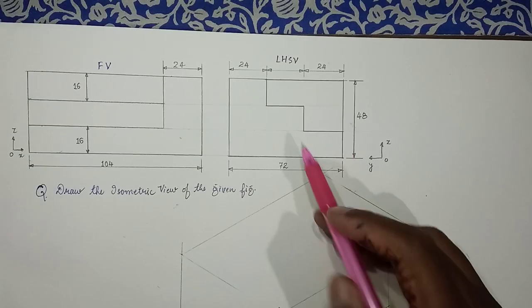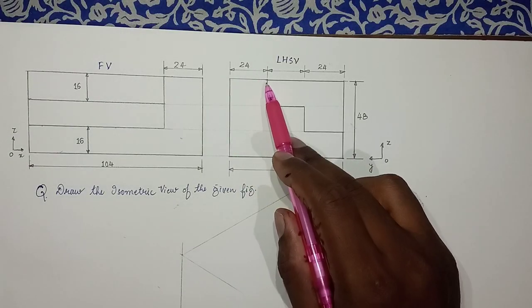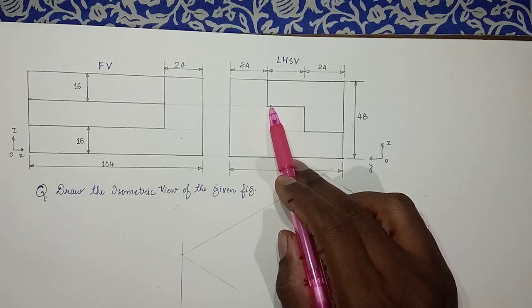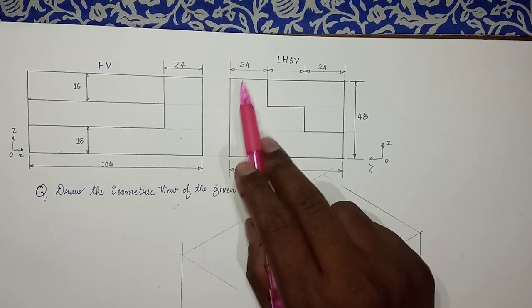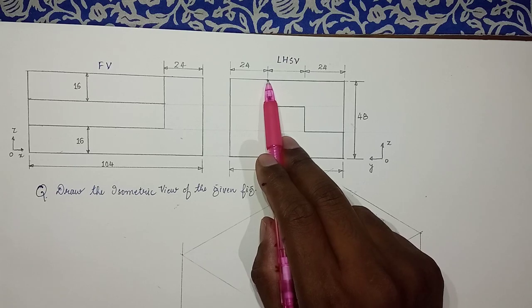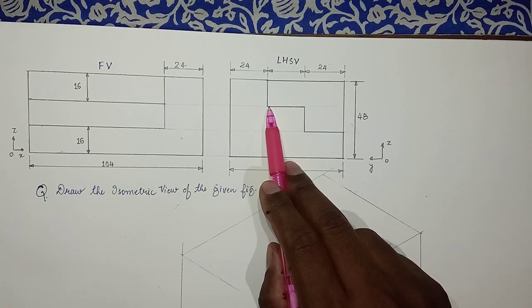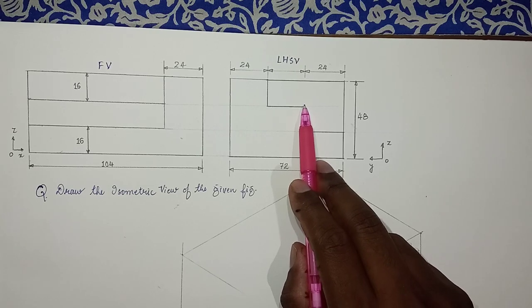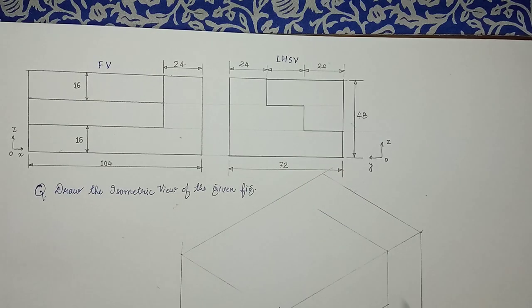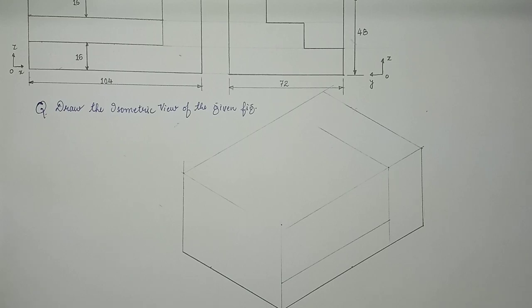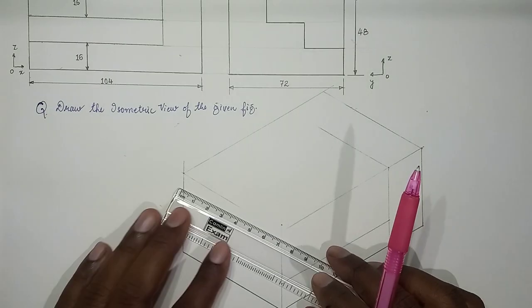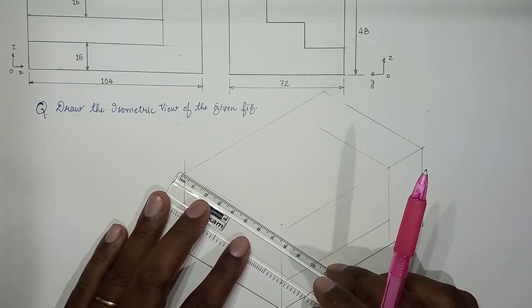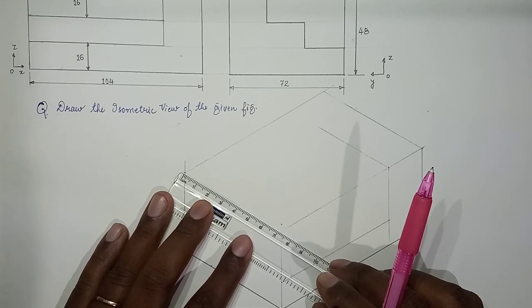So in the side, this is 24 and 16. So this is 24 along y-axis and you are coming down along z-axis. 24 along y, 16 along z. So if you go along the axes it will be quite subtle for you. So now mark 24 along y-axis.